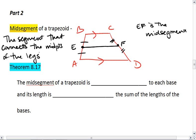This brings us to Theorem 8.17, and that tells us that the midsegment of a trapezoid is parallel to each base, and its length is 1/2 the sum of the lengths of the bases.